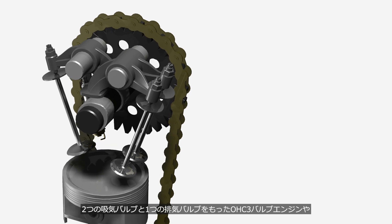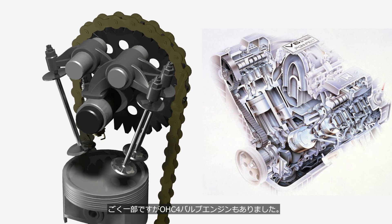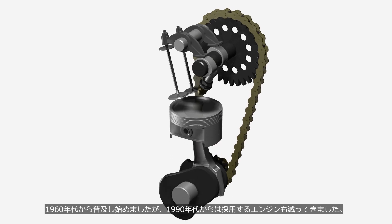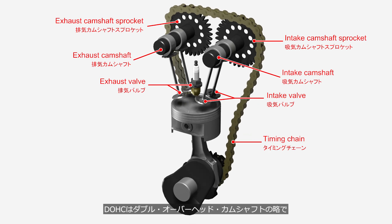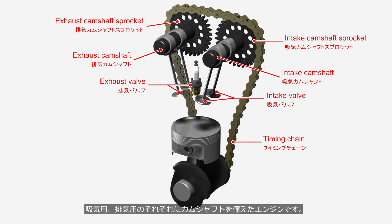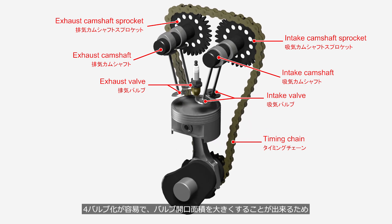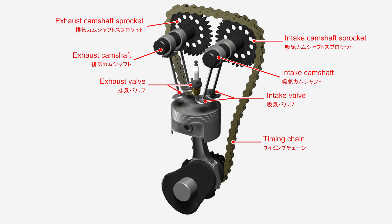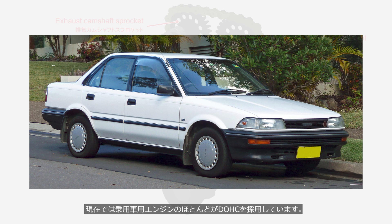There were three-valve OHC engines with two intake valves and one exhaust valve, and in rare cases even four-valve OHC engines. The OHC configuration became popular in the 1960s, but the number of engines adopting it started to decline from the 1990s. DOHC stands for double overhead camshaft, referring to an engine that has a separate camshaft for both intake and exhaust. It is easy to implement a four-valve configuration, allowing for a larger valve opening area. DOHC engines were initially used in high-performance engines, but after Toyota began using DOHC in efficiency-focused engines in the late 1980s, it became mainstream. Today, most passenger car engines use DOHC configuration.